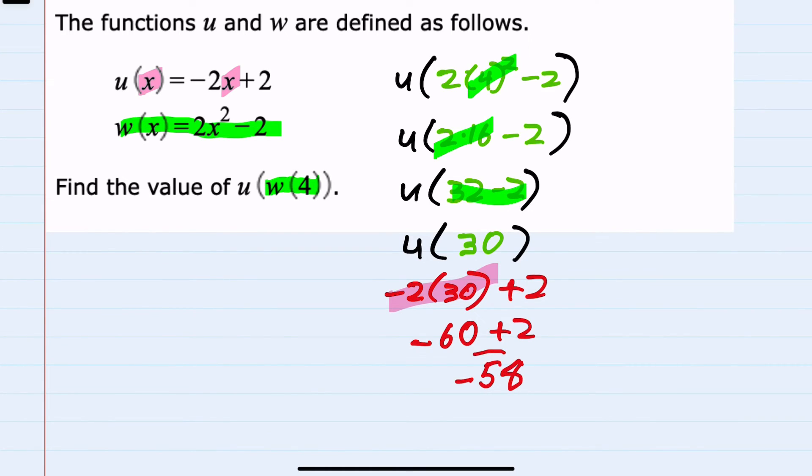So our final solution is negative 58. After plugging in 4 into w, that function simplified to 30. And then we plugged the 30 into u to get our final solution.